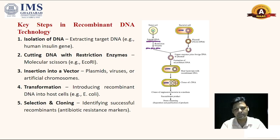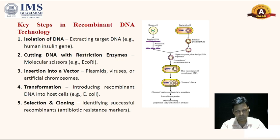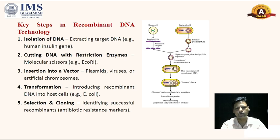Then we have to insert that gene of interest onto vectors. Commonly used vectors are plasmids, viruses, and artificial chromosomes. Then we transform these recombinant DNA constructs into host cells to produce many recombinant DNA molecules. After that, we screen those recombinant DNA constructs, identify successful recombinants, and then isolate the products — whether that is cloned DNA or expressed protein.